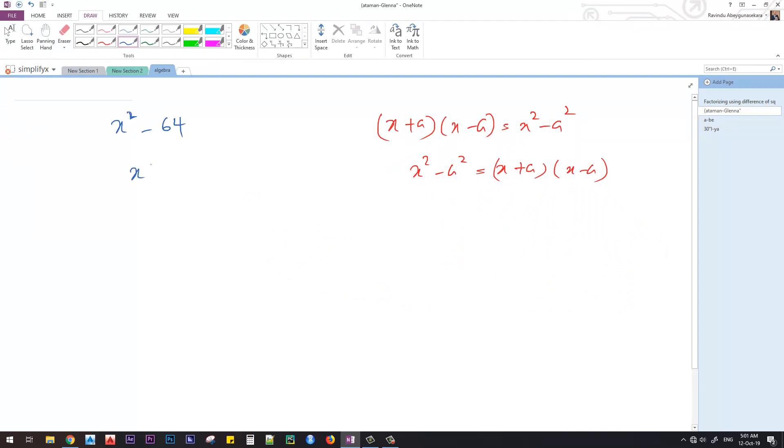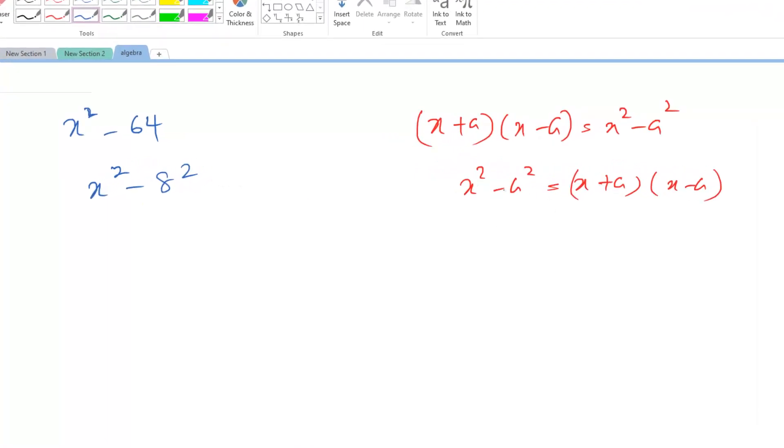So X squared is here, no problem. We need to identify what squared gives us 64. 8 squared equals 64. So now we have this expression in the form of X squared minus A squared, where 8 acts as A. Now we can write it as (X - 8)(X + 8).